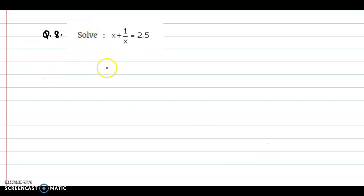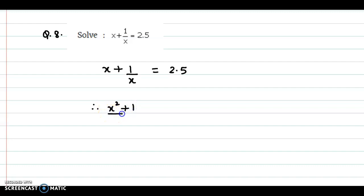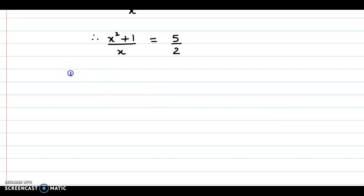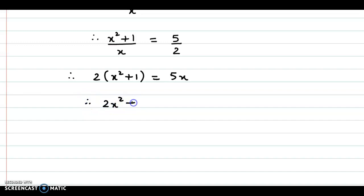Now question 8. The equation is X plus 1 upon X is equal to 2.5. Here we equalize the denominator, so we have X square plus 1 upon X. Now 2.5 could be expressed as 5 upon 2. We simply cross multiply and we obtain our quadratic equation. So this will be 2 times X square plus 1 is equal to 5 into X, that would be 5X. So we obtain 2X square plus 2 is equal to 5X.